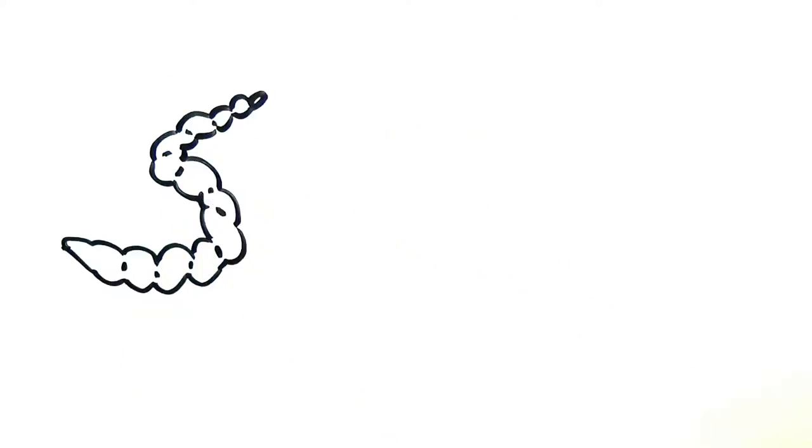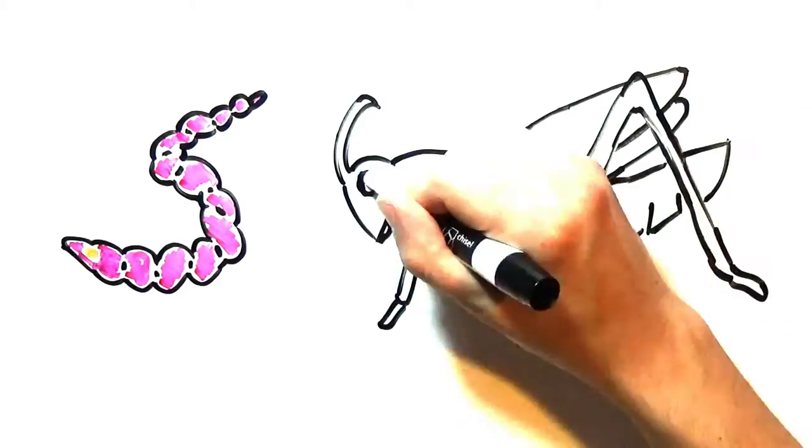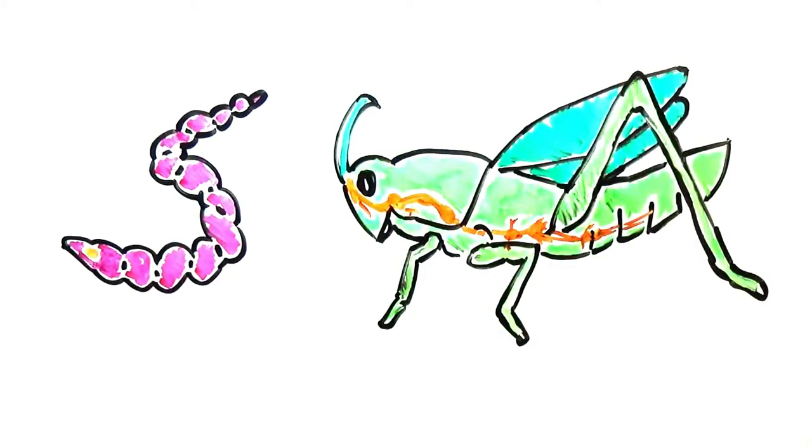So what about other invertebrates? Well, some have what resembles a central brain, like earthworms, but others, like insects, also have neurons scattered around their body. Because they still have neurons, invertebrates appreciate some of the perks of processing information without the energy expenditure it takes to sustain a large central brain.